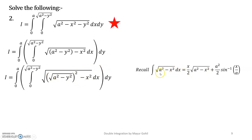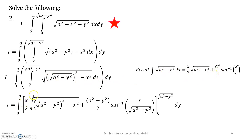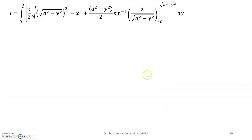Using the formula for ∫√(a² − x²) dx, we write the expansion: it is (x/2)√[(a² − y²) − x²] plus (a² − y²)/2 times sin⁻¹(x / √(a² − y²)), with limits 0 to √(a² − y²), and dy remains outside.